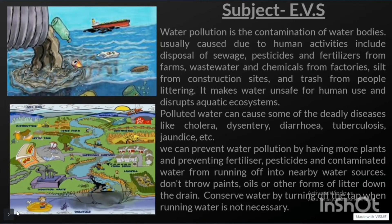We can prevent water pollution by planting more plants and preventing fertilizers, pesticides and contaminated water from running off into nearby water sources. Don't throw paints, oil or other forms of litter down the drain. Conserve water by turning off the tap when running water is not necessary.